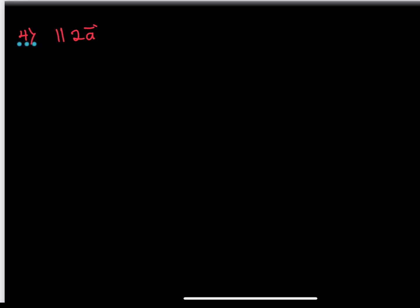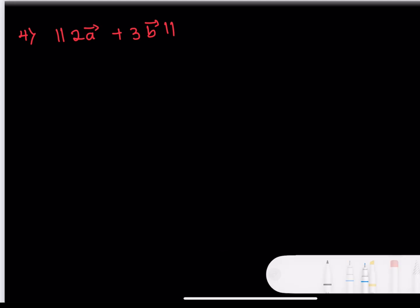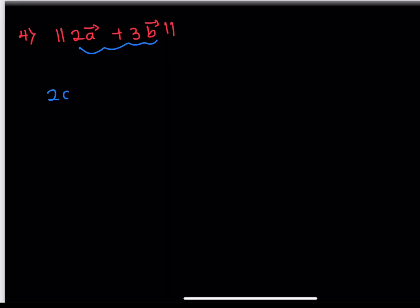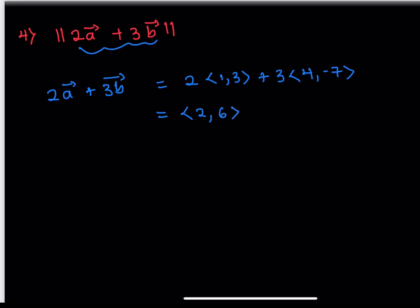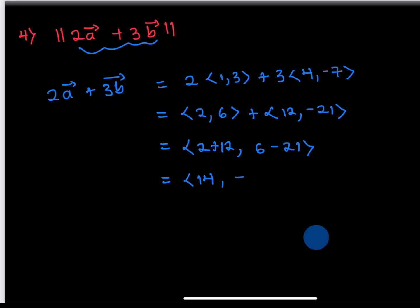For the fourth problem, we compute the magnitude or norm of 2a plus 3b. First, we compute 2a plus 3b: 2 times (1, 3) plus 3 times (4, -7) gives (2, 6) plus (12, -21), which equals (14, -15).